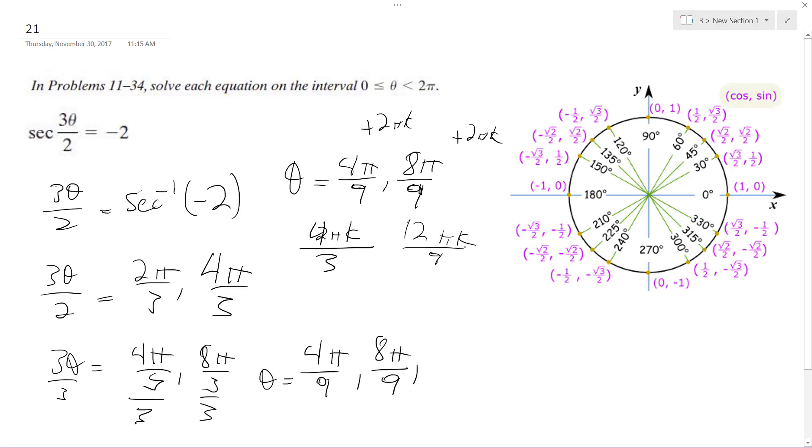So 16, that does work. So 16 pi divided by 9, which is just a little bit less than 2 pi.